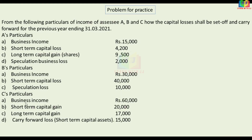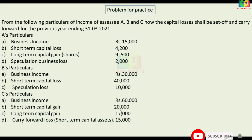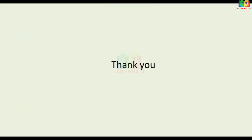For Assessee C in the practice problem: business income is 60,000, short-term capital gain is 20,000, long-term capital gain is 17,000, and the carry-forward short-term capital asset loss is 15,000. This 15,000 can be adjusted against the capital gain. Work out this problem — it's easy. Comment your answer below, I'll check it. Thank you for your patient listening.